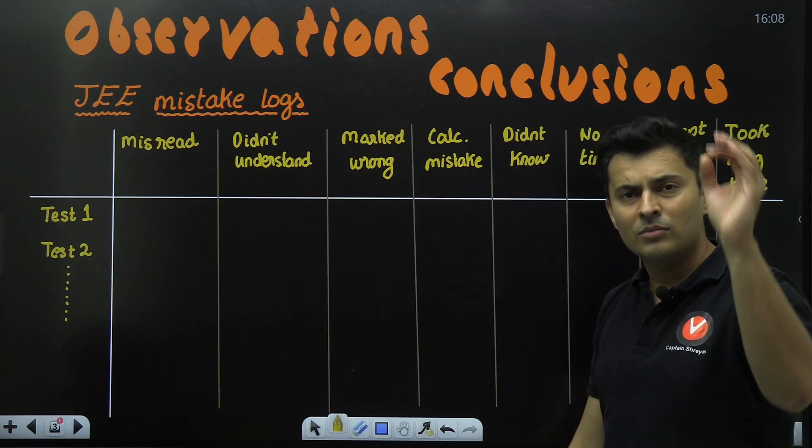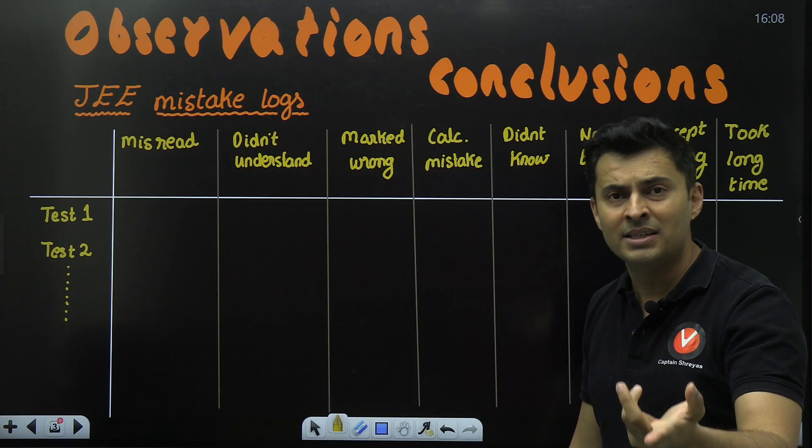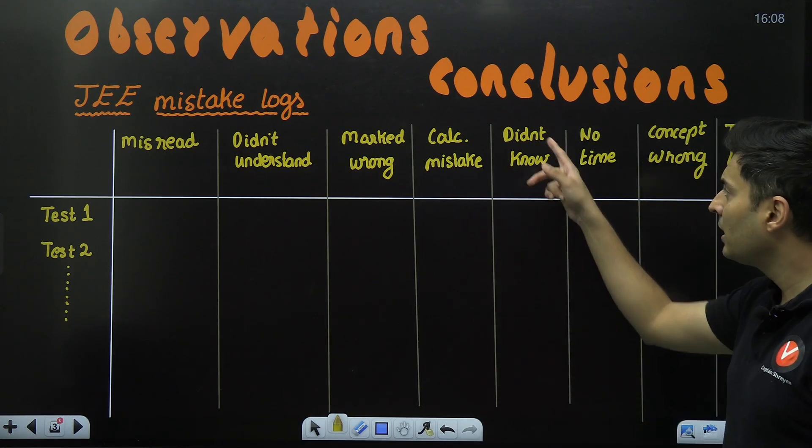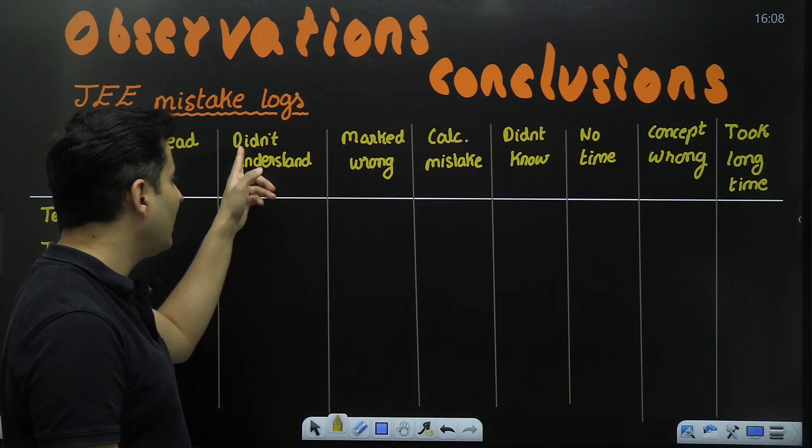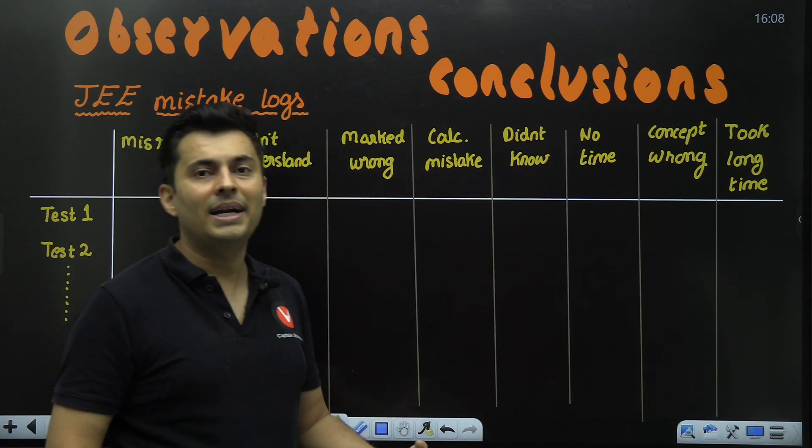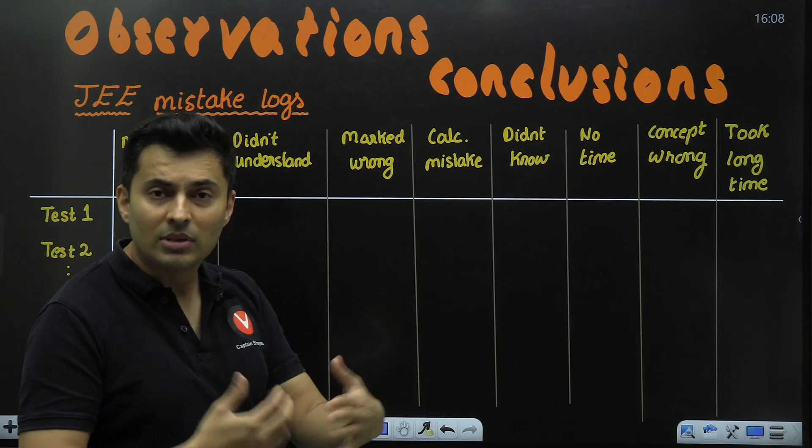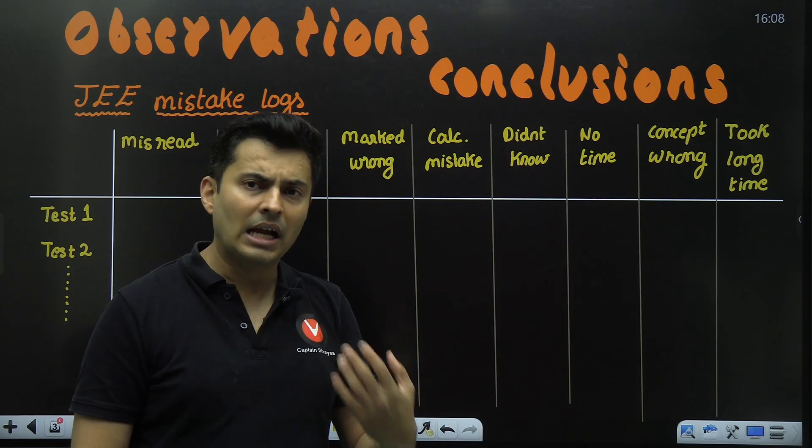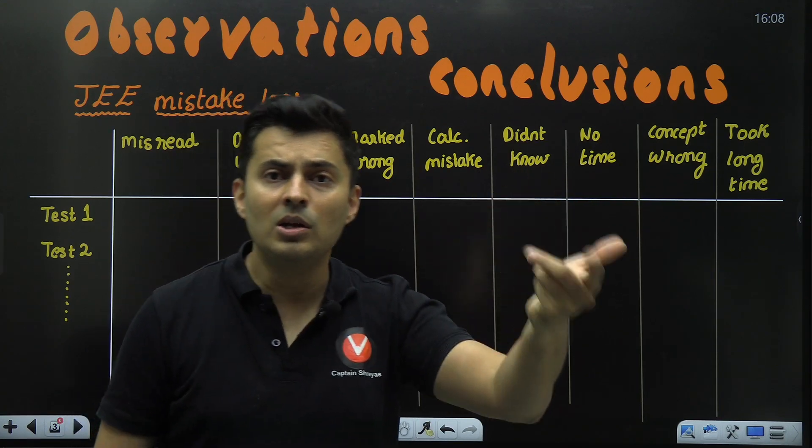Did you not understand the question only? Are you thinking what is asked, not able to start? Marked answer wrong? You thought B but while marking you marked C? Calculation mistake—you solved it correctly but made a blunder in the calculation, number two was missing in the formula?